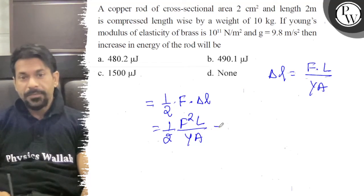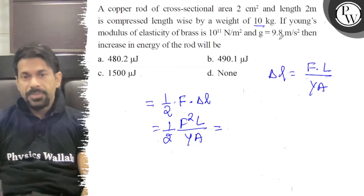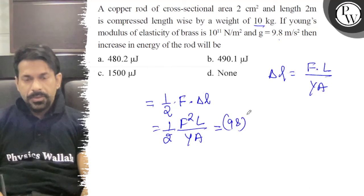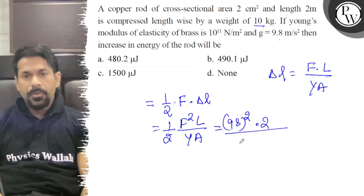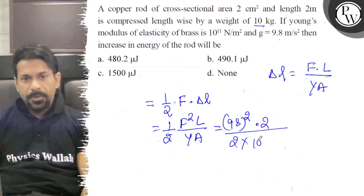Now F equals Mg, which equals 98, so F squared equals 98². This equals 98² times 2 meters, divided by 2 times 10^11 times the area, which is 2 cm².